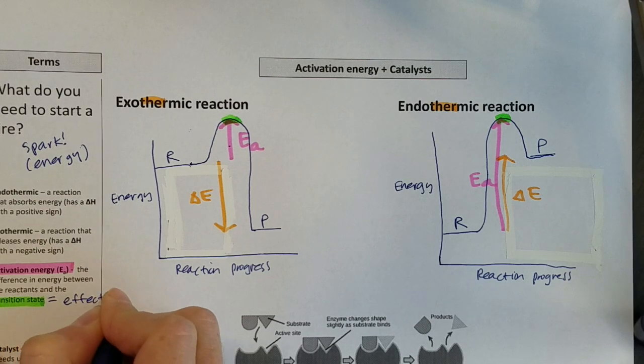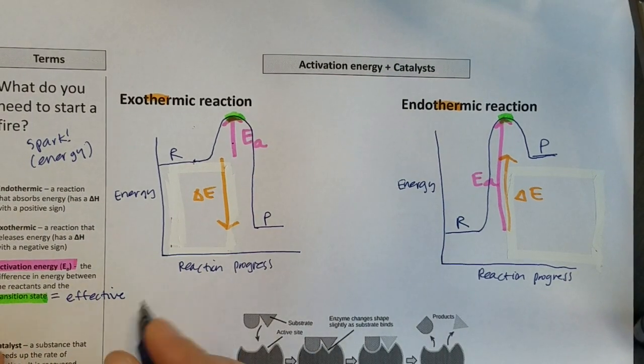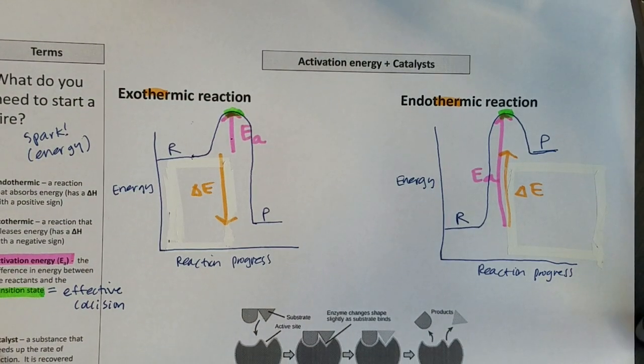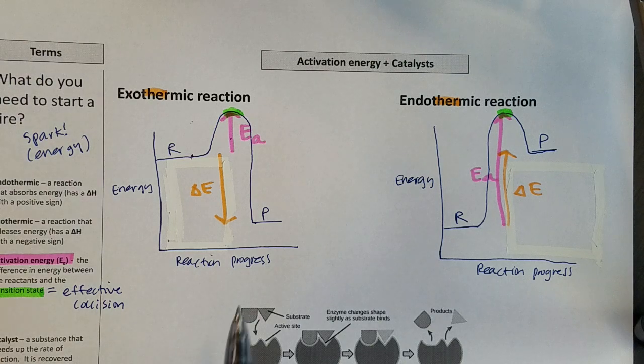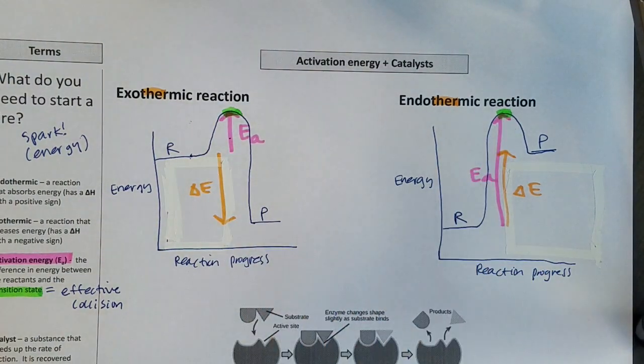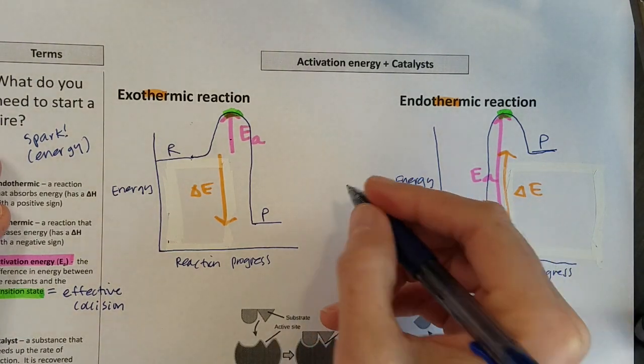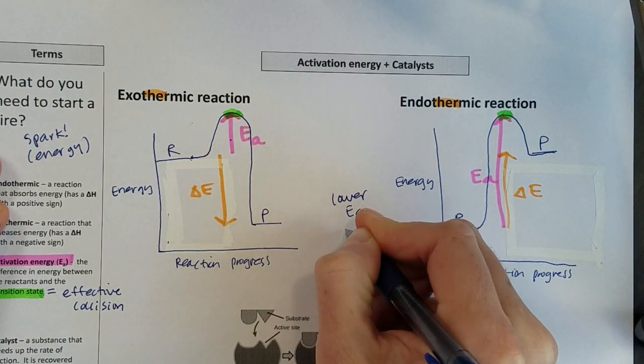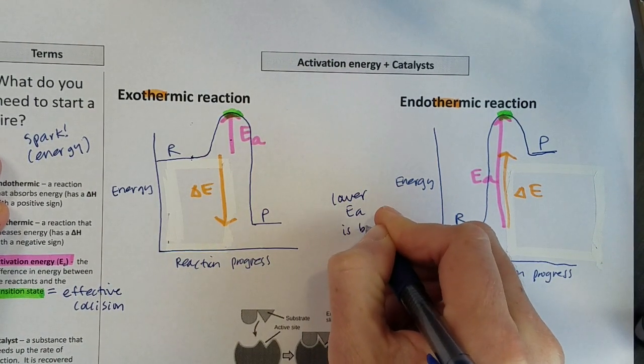And that transition state was an effective collision between molecules or atoms or whatever you're combining. Now, this is kind of difficult. I have to give a spark, or I have to give a lot of energy there. And so one way that we can lower that activation energy is by using a catalyst.